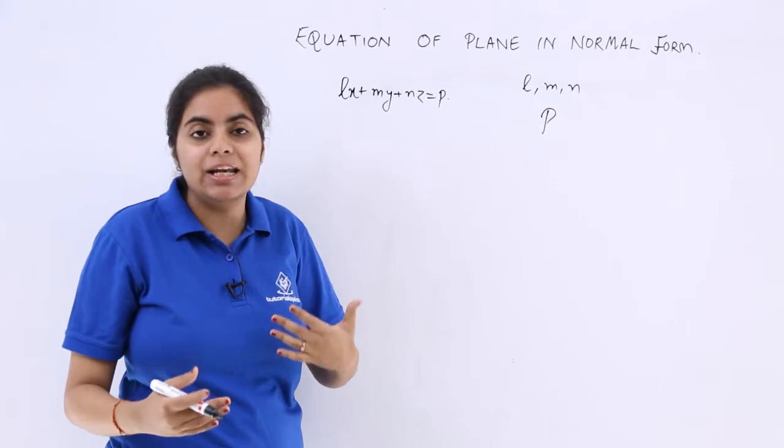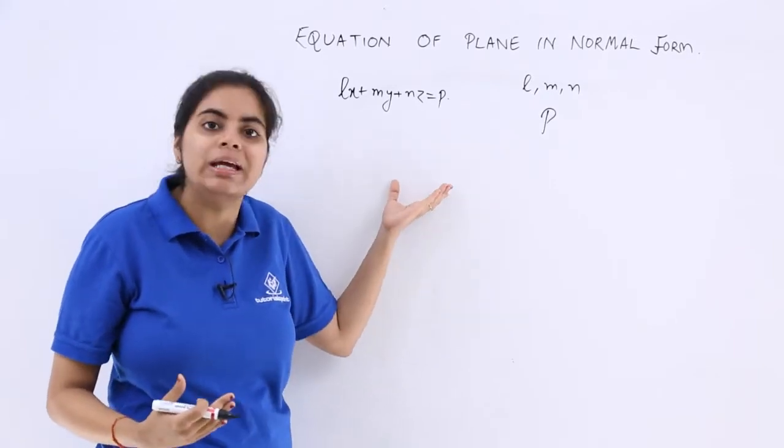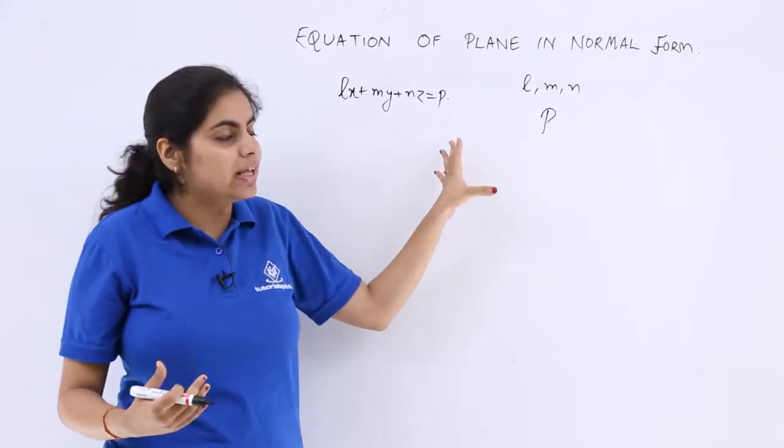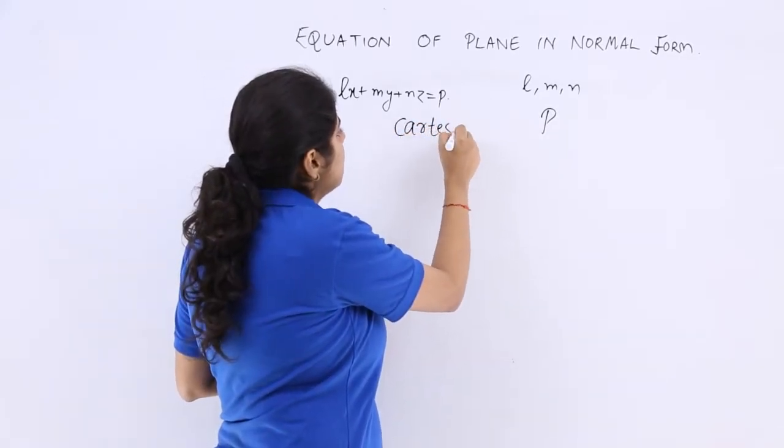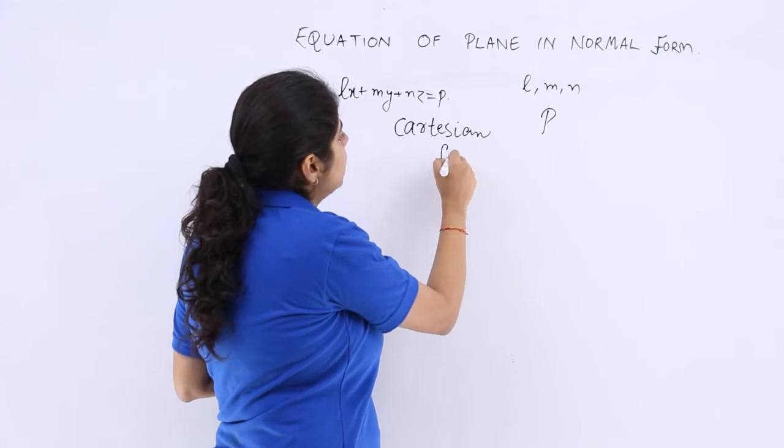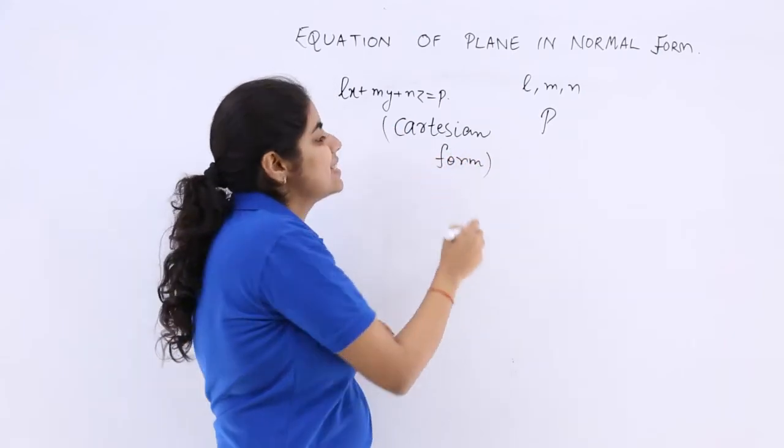If you have been given direction ratios, we will also see with the help of questions what to do in that case. So this is a very general form and that is specifically known as Cartesian form because in the previous video, in the earlier video, you had seen the vector form.